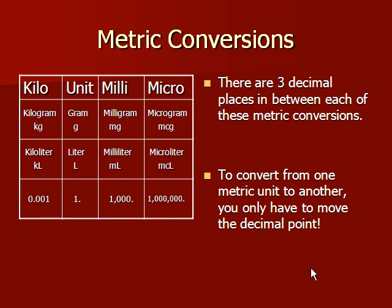The metric system is based on units of ten. Prefixes are used to show what unit of ten is being referred to. The units you will be using for drug dosage calculations are all three decimal places away from each other — units of a thousand. For this reason, when performing conversions from one metric unit to another, you may simply move the decimal three places to the left or right, depending on the conversion.